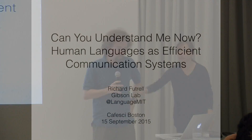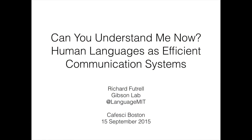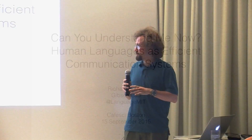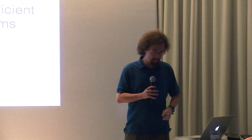I think human language is the most interesting thing that we could study in the world. Only humans have it. It gives us an unparalleled ability to communicate and coordinate, and we still have relatively little idea of how it works in detail, so it's very exciting. Today I'm going to be looking at the universals of human languages and the variation between human languages from the perspective of idealized, efficient communication systems.